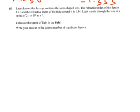So F, last one. Laura knows that her eye contains the same shaped lens. Remember what we were talking about was the convex lens, the converging lens. The refractive index of this lens is 1.41. That's important info. The refractive index of the fluid is 1.34. Light travels through the lens at this speed here. Calculate the speed of light in the fluid.